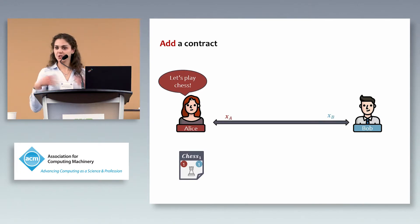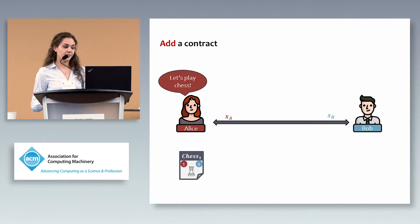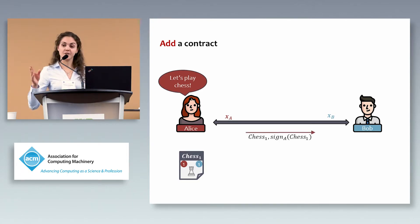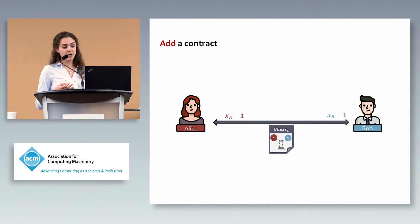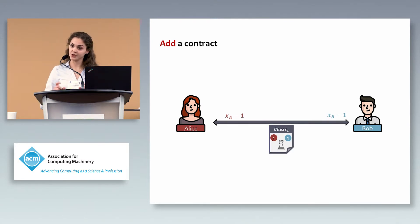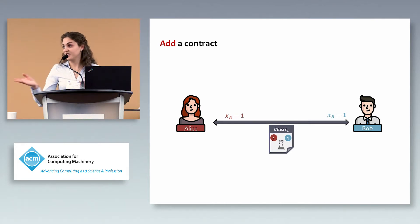As you can see, each party now has one coin less available in the channel because it's locked in the chess game. They continue playing by exchanging signatures on new versions of the game. This is very simple — if both parties are honest, they just exchange signatures.